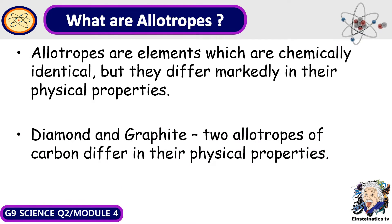So what does allotropes mean? Allotropes are elements that have the same chemical makeup but different physical properties. Diamond and graphite are two allotropes of carbon wherein they differ in physical properties.